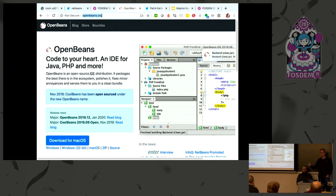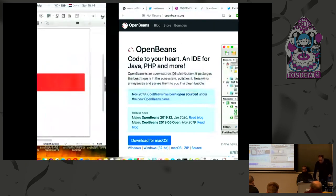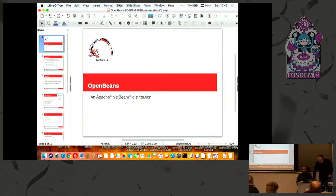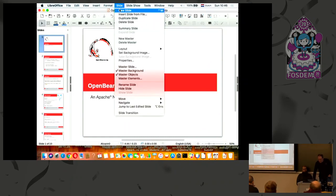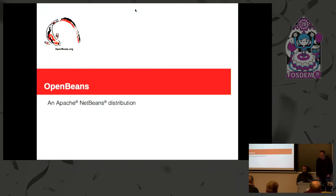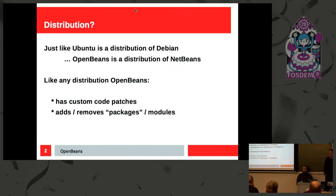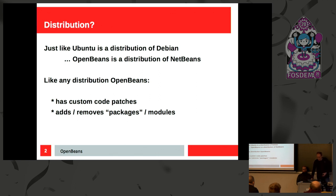So long as they follow the Apache governance rules around that, and this person has done that. His name is Emilian Bold. This is just to introduce you briefly to OpenBeans. That's how to think about it — it's a distribution that's like Ubuntu. It could have patches, it could have additional features added to it, which means it's no longer Apache NetBeans. It's something different, and it has its own unique name.